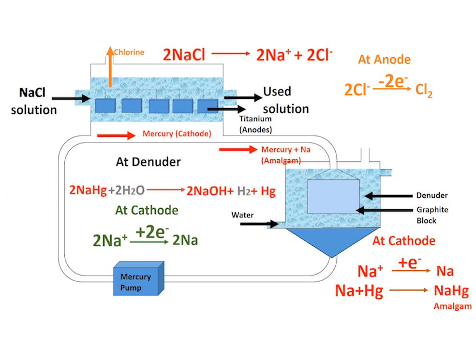Hydrogen gas is easily liberated over the graphite surface. The solution of sodium hydroxide is evaporated to dryness, and mercury is recycled and pumped to the upper chamber for the production of the next batch.